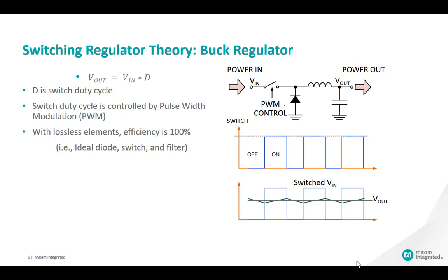This is a switching buck regulator. The pulse-width modulator, or PWM, switches VIN on and off at duty cycle D. When the switch is on, VIN appears at the input of the LC filter and current flows from VIN to VOUT. When the switch is off, the diode conducts and current flows through the rectifying diode and the LC output filter. Assuming ideal circuit elements, this switching system is lossless and efficiency can be 100%.